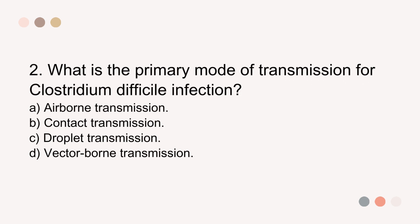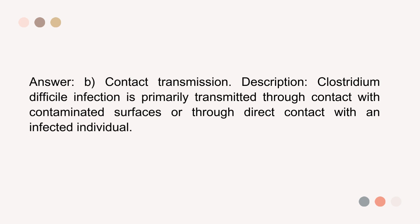Question 2. What is the primary mode of transmission for Clostridium difficile infection? A. Airborne transmission. B. Contact transmission. C. Droplet transmission. D. Vector-borne transmission. The answer is B. Contact transmission. Description: Clostridium difficile infection is primarily transmitted through contact with contaminated surfaces or through direct contact with an infected individual.